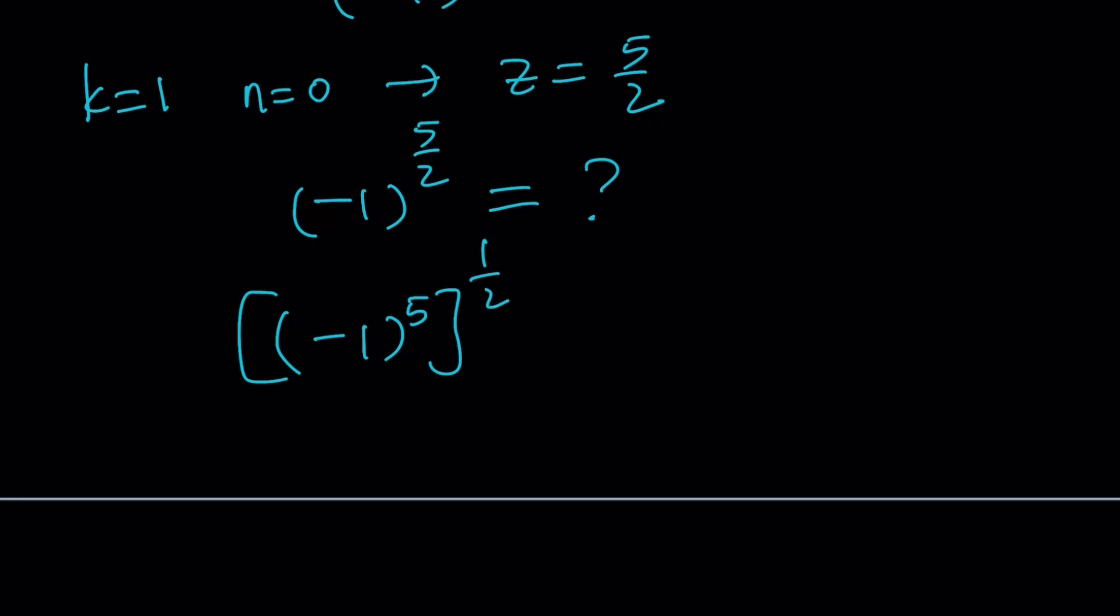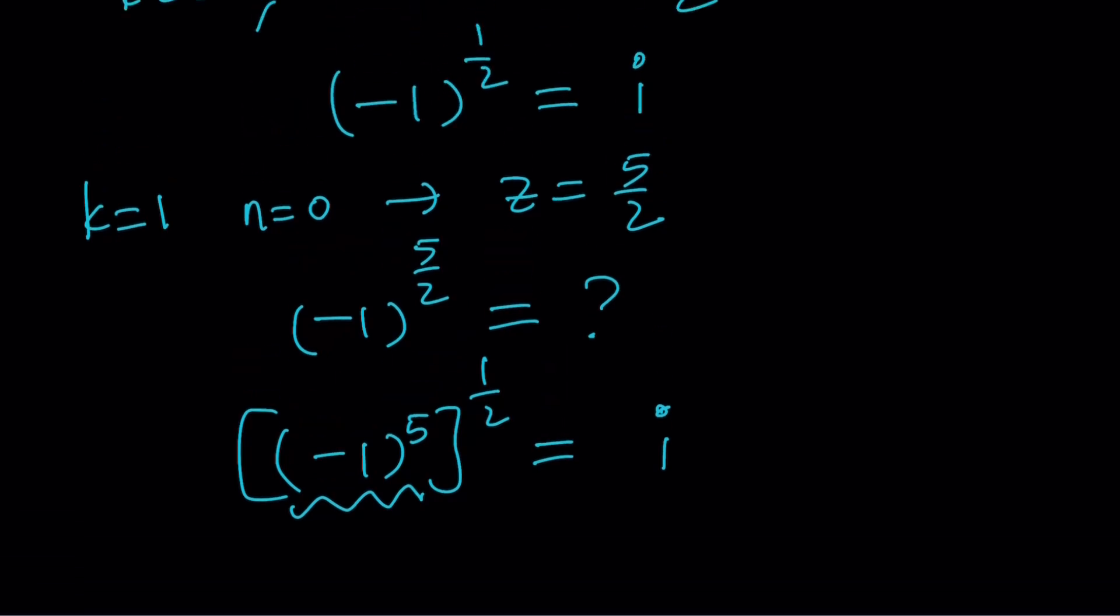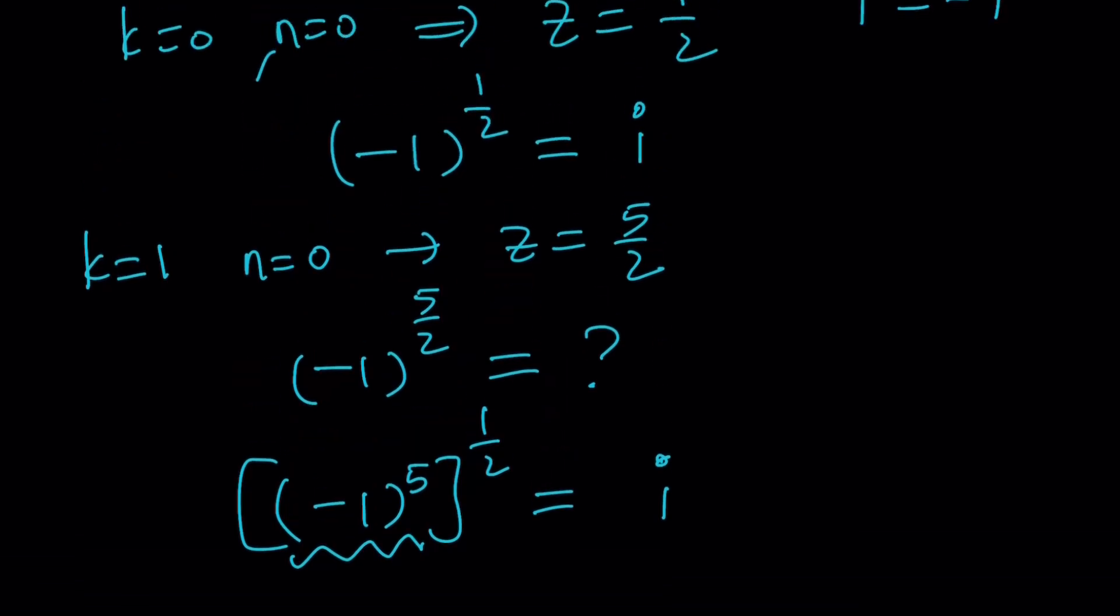This would mean negative 1 to the fifth power which is negative 1 and then negative 1 to the power 1 half is obviously i because it's the principal value, even though it might be a little ambiguous for some people. That seems to work so what is wrong with this approach then?